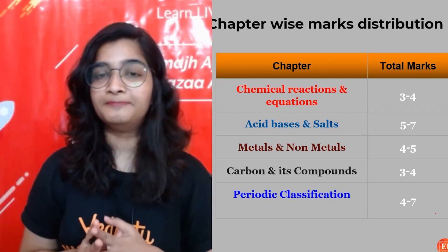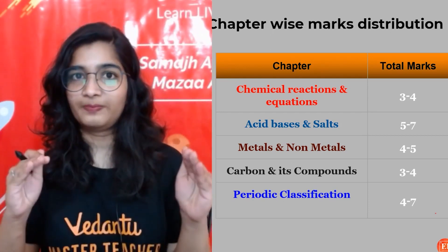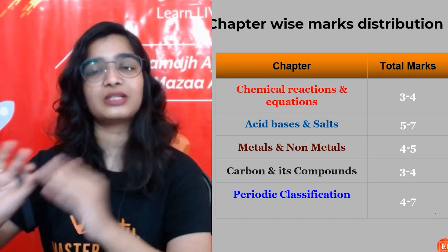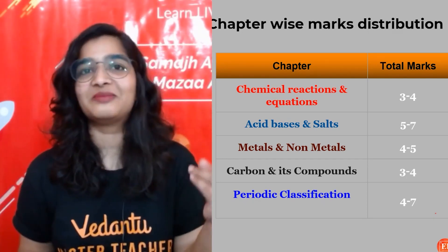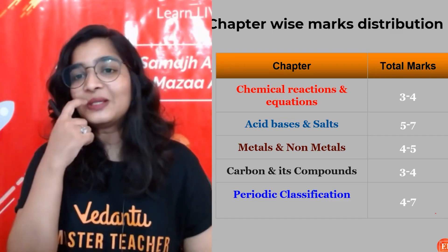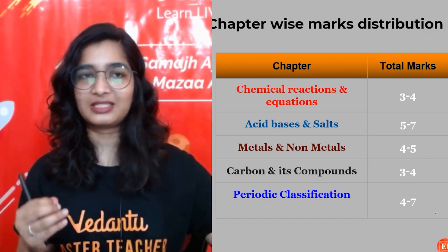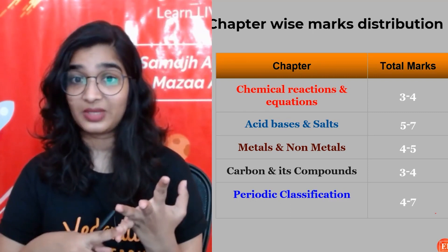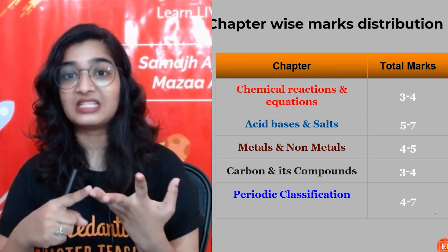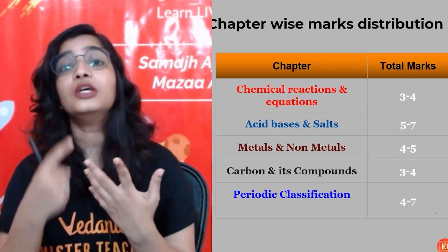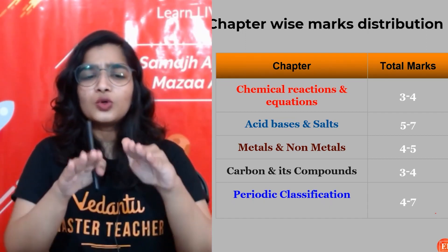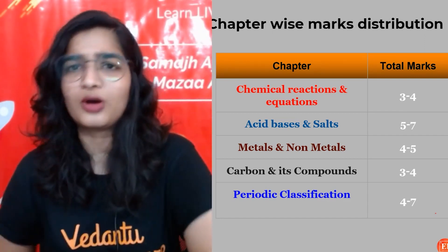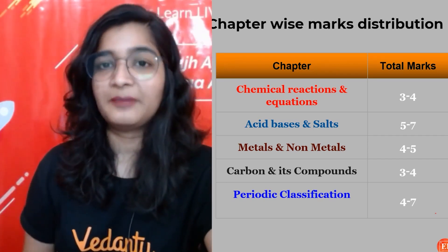Regarding chapter-wise marks distribution: as you know, there has been a reduction in the syllabus. In Metals and Non-metals, the extraction part has been removed. In Carbon Compounds, only 20 to 30 percent of the original content is left. Due to these changes, the focus may shift to different topics. I'll tell you what are the important topics to focus on in every chapter.